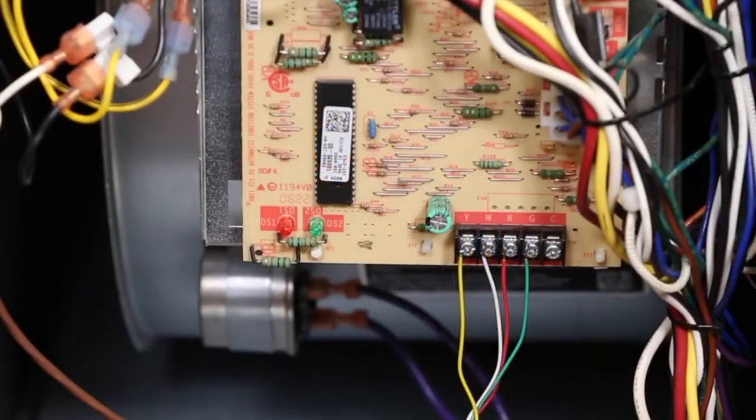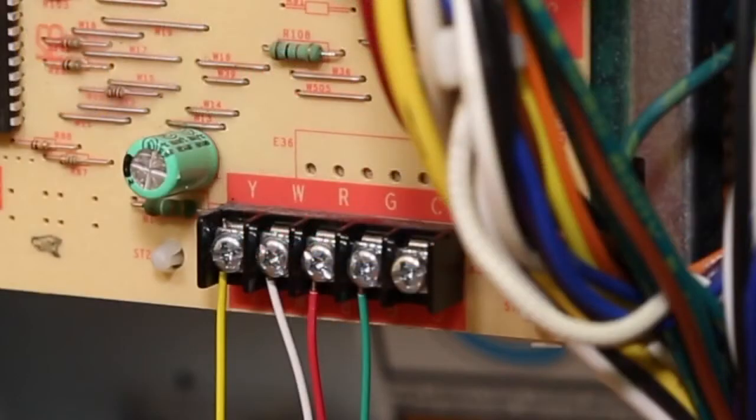Once inside, look for the furnace control board. On this board, you will see terminals with the same wires from your thermostat base plate. These terminals will include labels such as Y, W, R, G, and C.